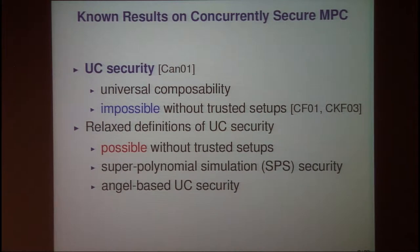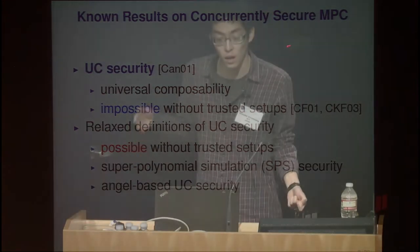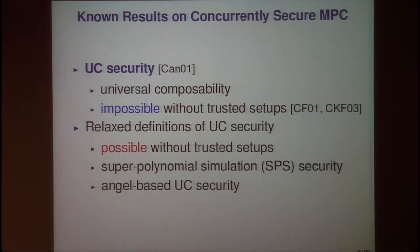As a formalization of concurrent security, Canetti proposed UC security, which guarantees a strong security property called universal composability. However, it was shown that UC security is too strong to achieve — it is impossible to construct a UC-secure MPC protocol without using any trusted setups. To obtain concurrently secure MPC, several works proposed relaxed definitions of UC security that can be achieved without trusted setups. Examples are superpolynomial-time simulation (SPS) security and engine-based UC security, which I will explain in the next slide.